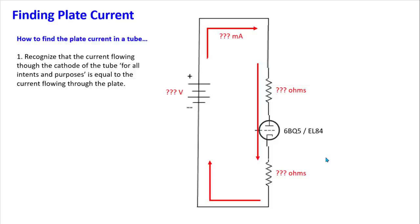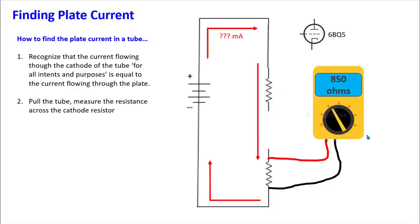Why is it easier to measure the current coming out of the cathode than the plate current going into the tube? First, if this is an output stage, you typically don't have a plate resistor — instead you have the primary winding of the output transformer, which is harder to measure. For amplifiers that are cathode biased, otherwise known as auto biased, you will have a cathode resistor between the cathode and ground, making it easy to measure across.